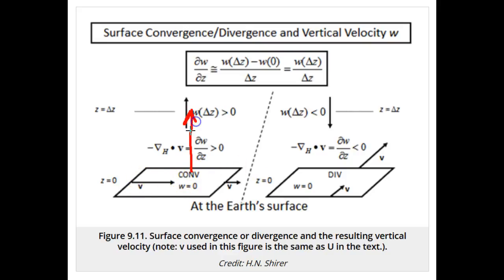The equation actually says that the partial derivative of w, the vertical velocity with respect to z, must be positive. But if w equals zero at Earth's surface and w is increasing with altitude, then w must be positive.